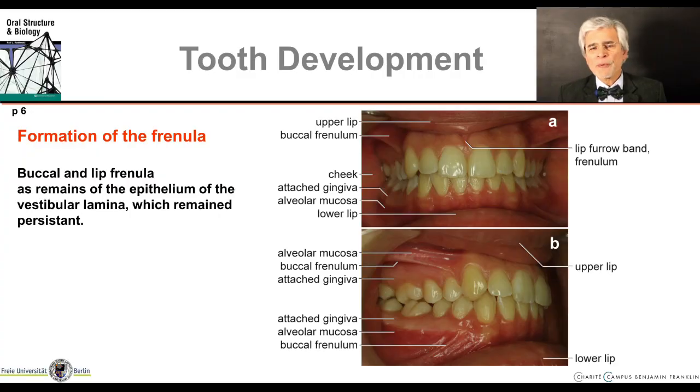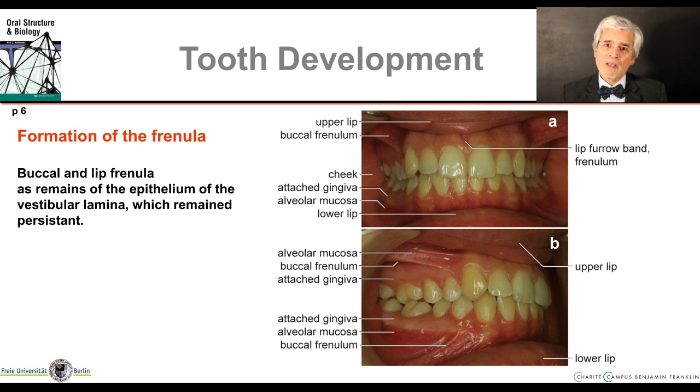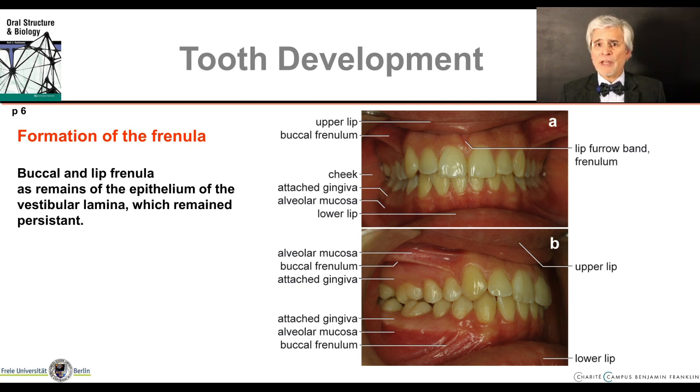Programmed cell death was also discussed, but this concept was not pursued further for this area. Perhaps the epithelial cells in this region are subject to precise genetic control, but so far there is no conclusive explanation or fully described signaling pathway for this either, and it remains enigmatic. If the vestibule is formed by the invaginated epithelium disappearing almost completely leaving a groove between the teeth and cheek and lips, then why do these lip frenula and frenula of the cheek remain in these specific places? These are actually leftovers where the once compact vestibular lamina epithelium has not been degraded.